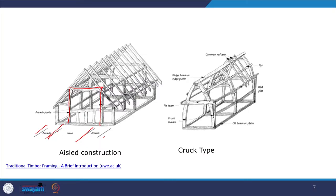The third model is the aisled construction. This is very prominent in the construction of churches, religious buildings, forts, or other public buildings. Here a nave is created with two arcades, referred to as arcade posts, which create the aisles, and over that the roof is made.